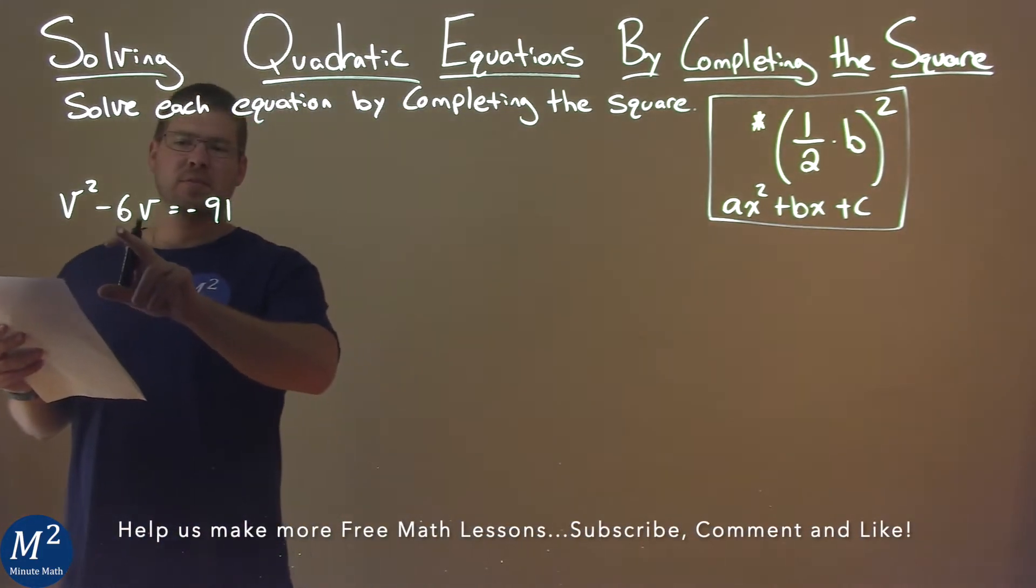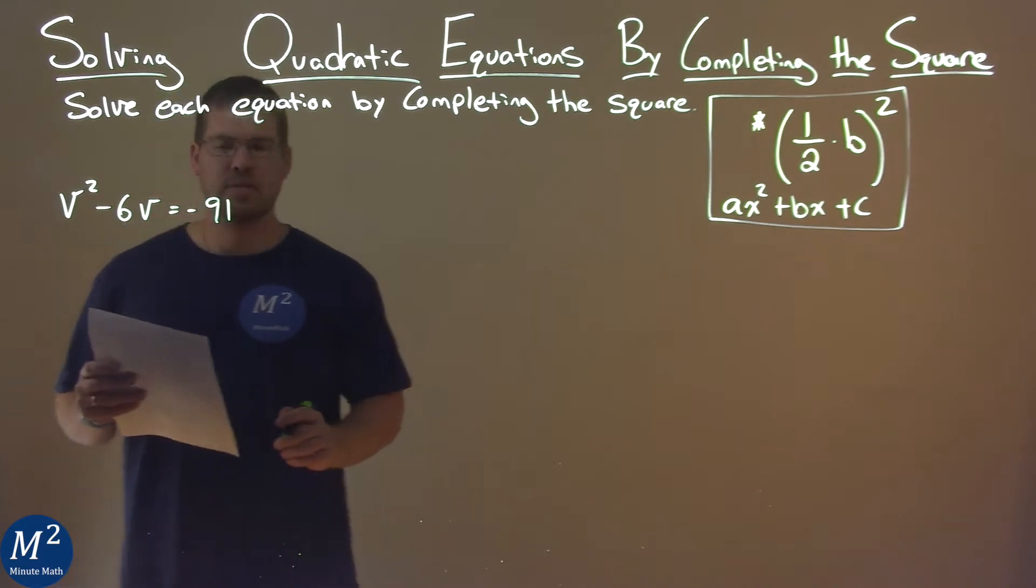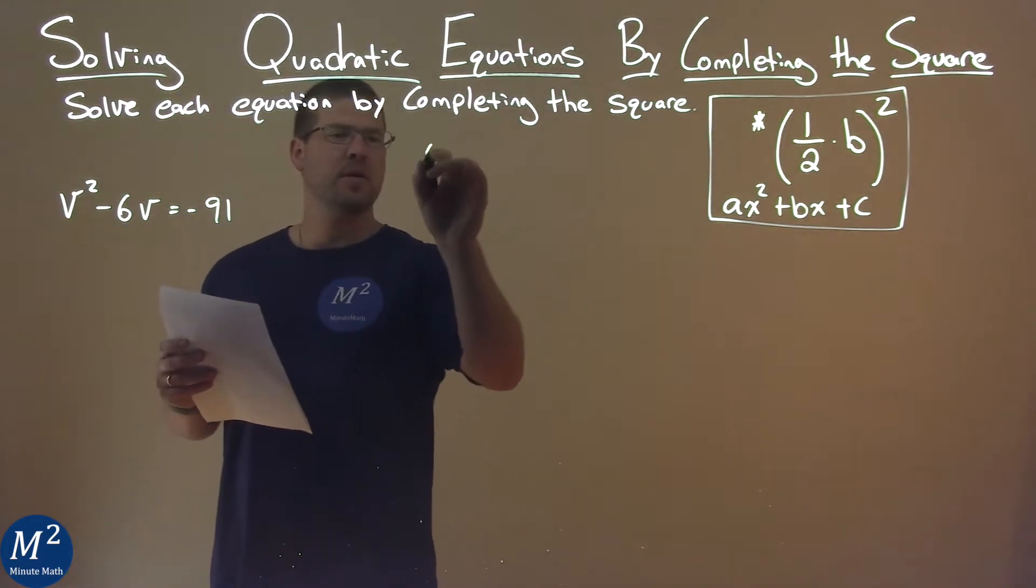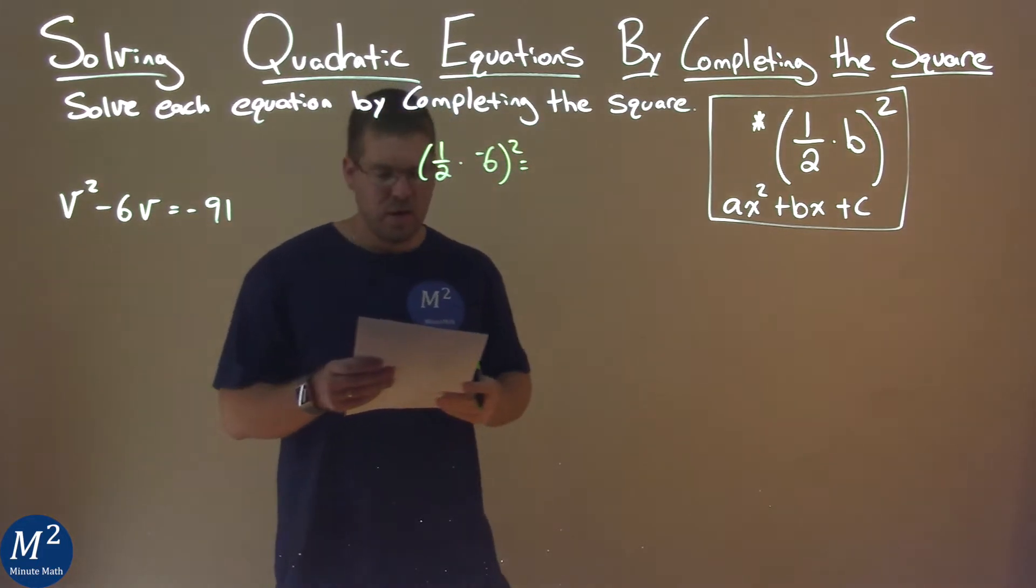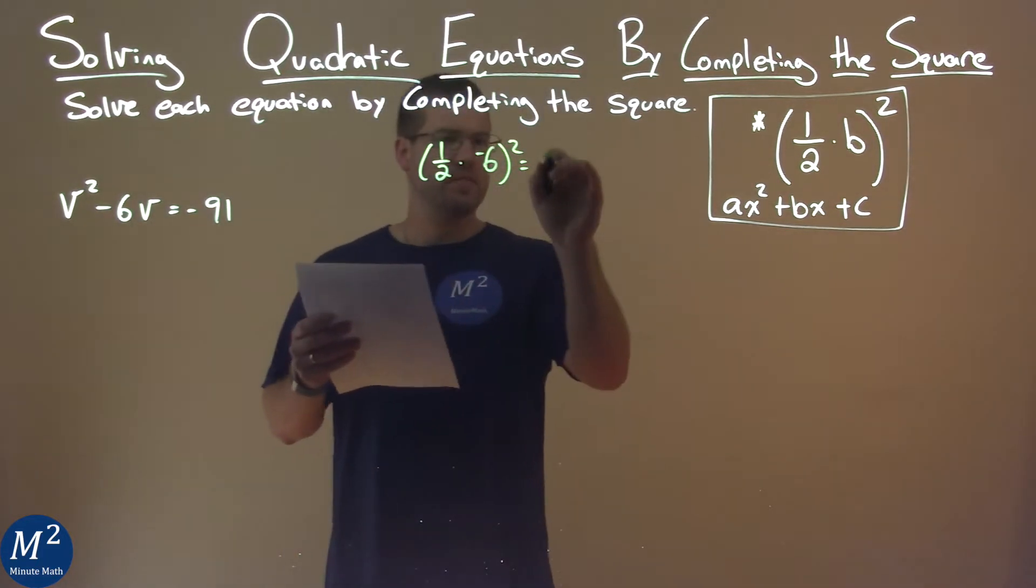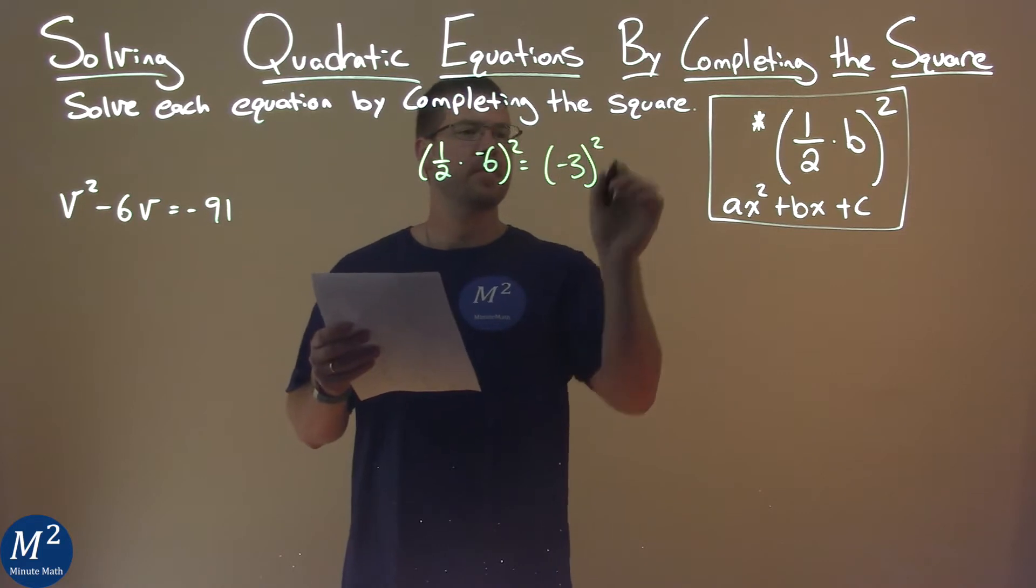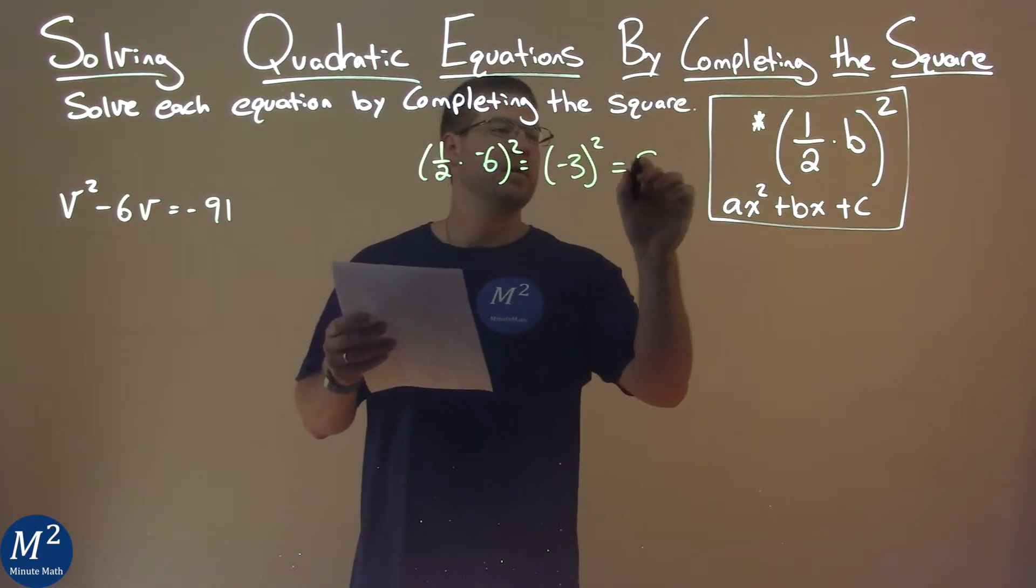Well first thing I see here is we have a b value of negative 6. So I'm going to use my formula 1 half times negative 6 all squared. Well 1 half times negative 6 is negative 3 and then when we square that we get 9.